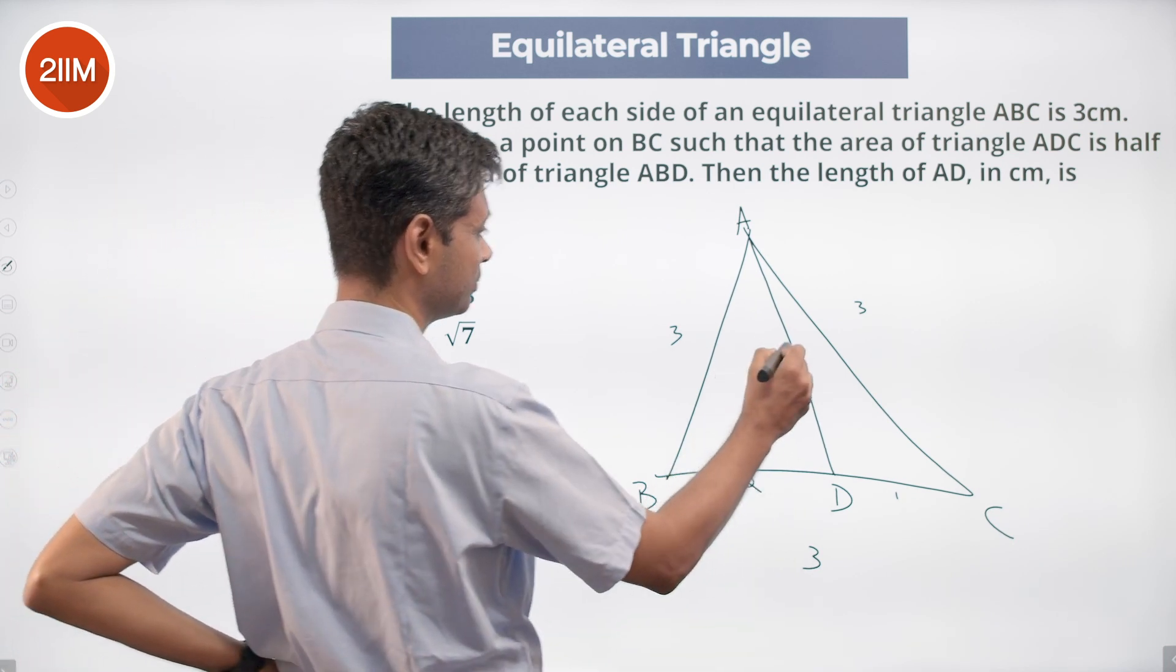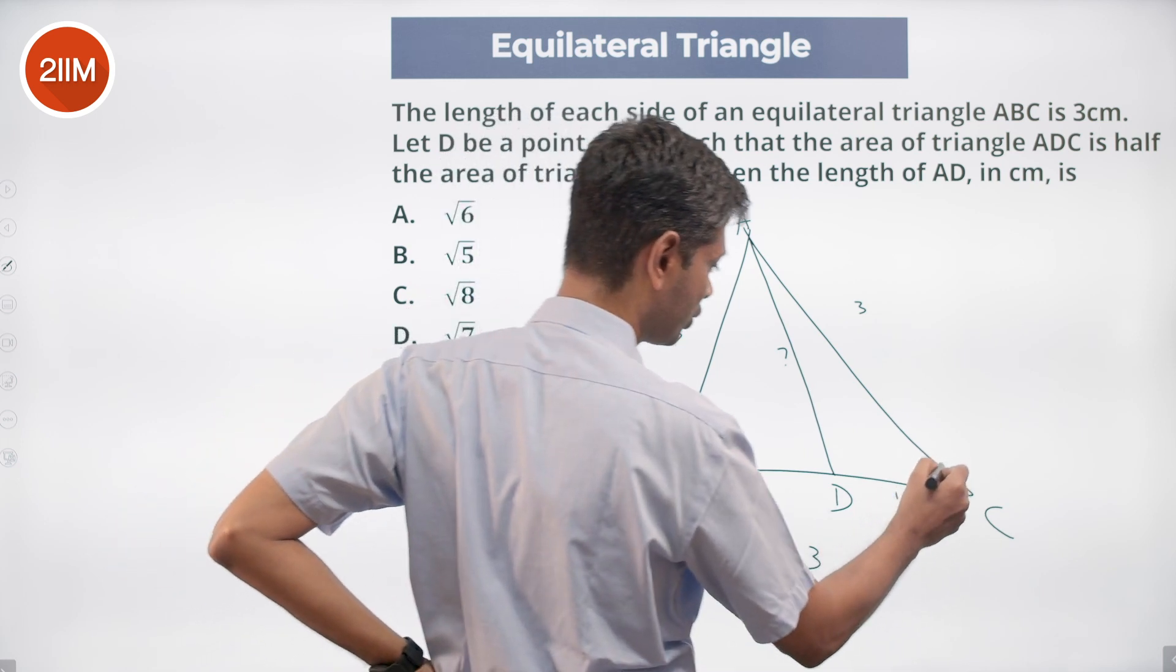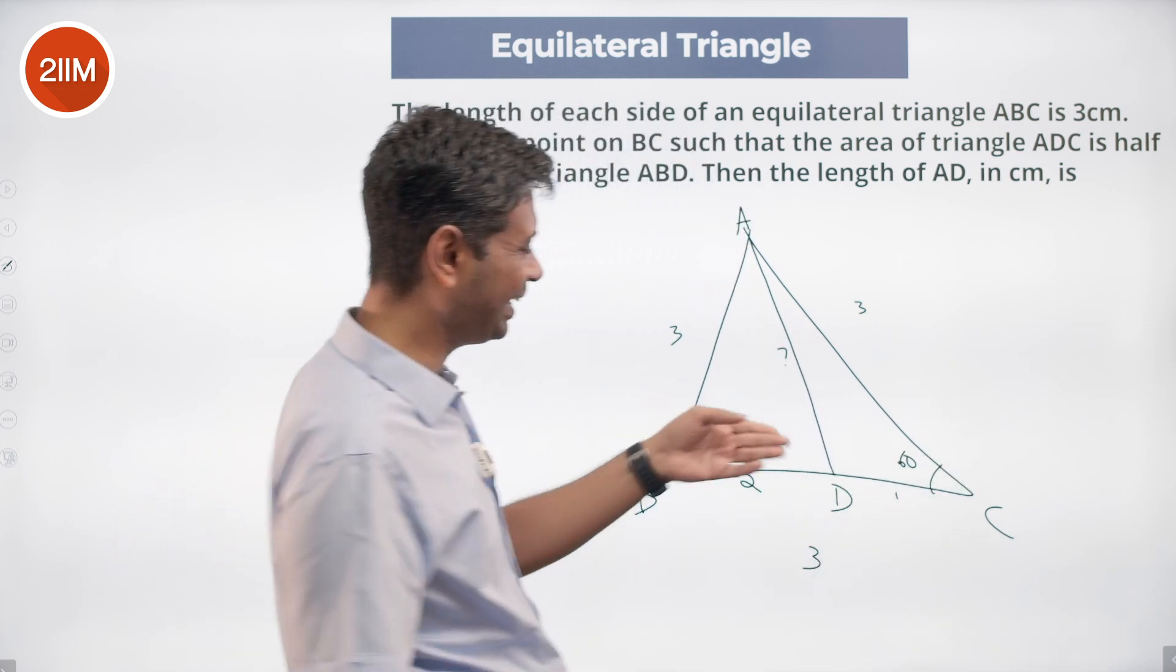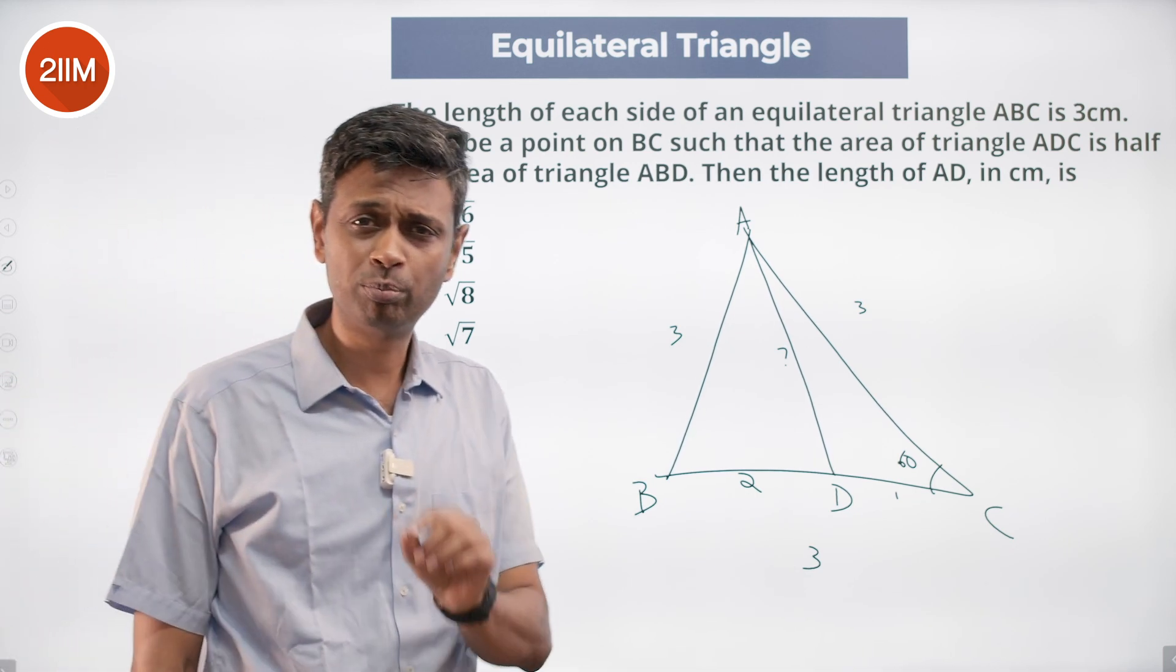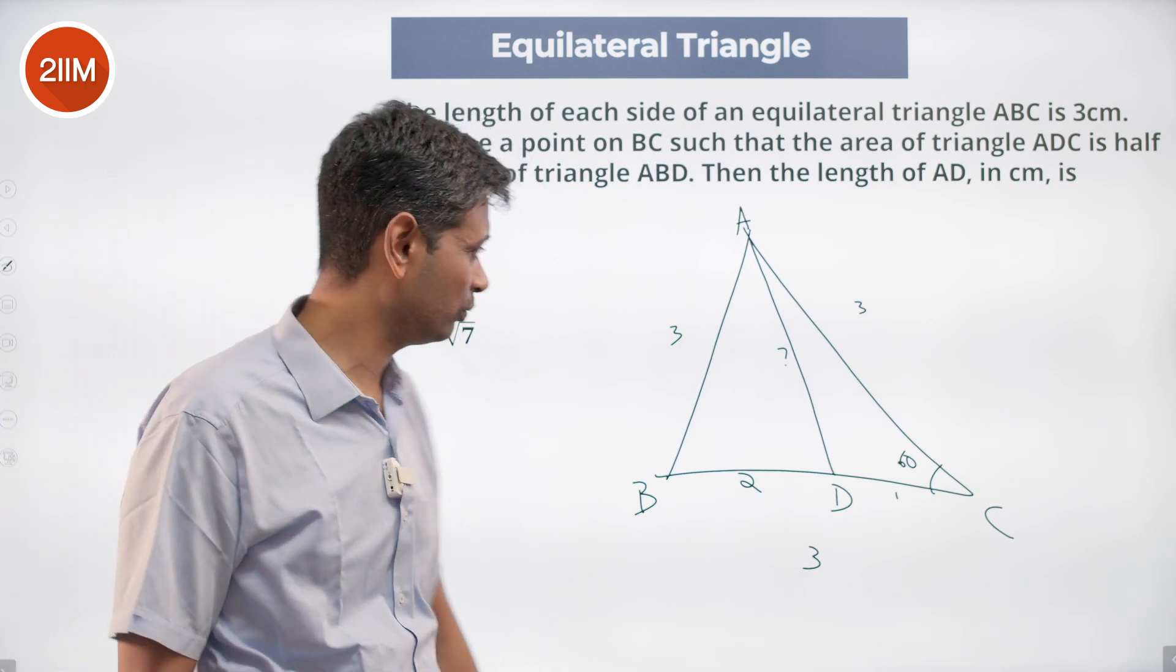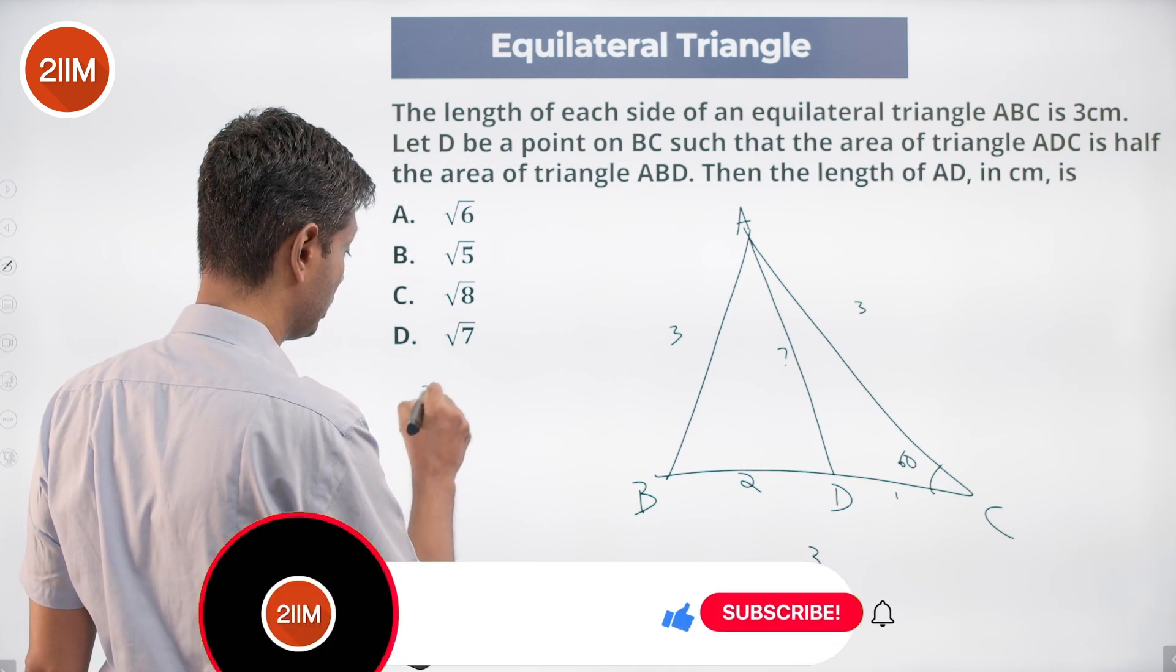This angle is 60 degrees. We have two sides and the angle in between, so we can find the answer. How do we find this answer? We use the cosine rule.